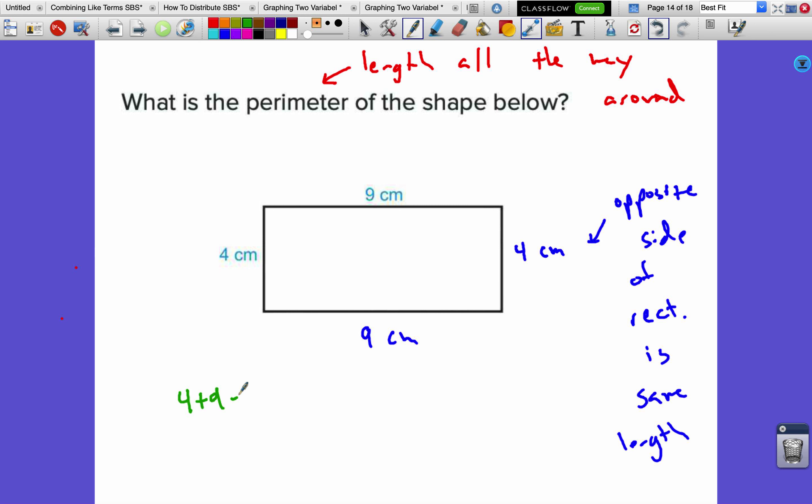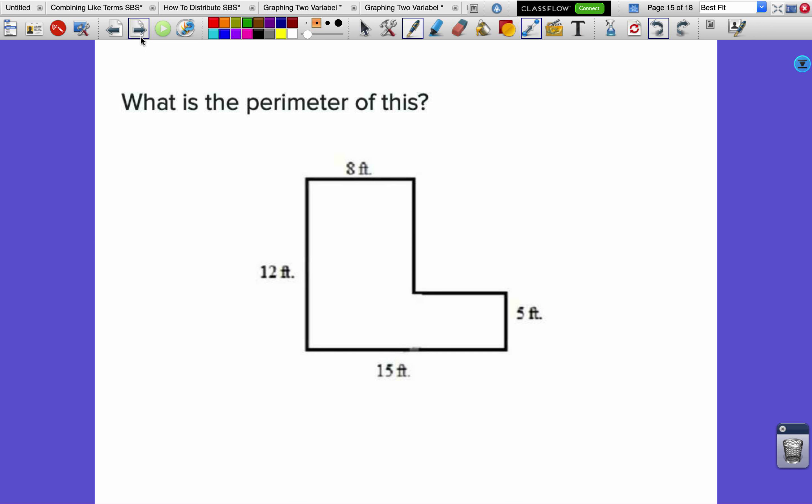Now our perimeter would be 4 + 9 + 4 + 9, going from here all the way around, getting every side once and only once. That equals 26, and then we give it a unit - we give it the unit of centimeters without a squared because it's just a length. 26 centimeters all the way around.